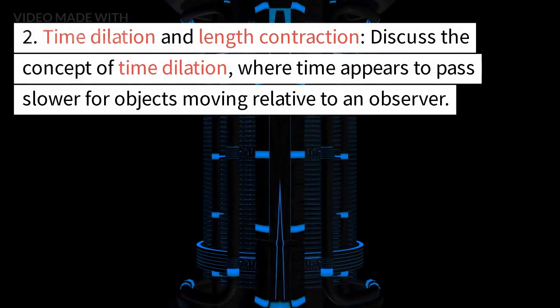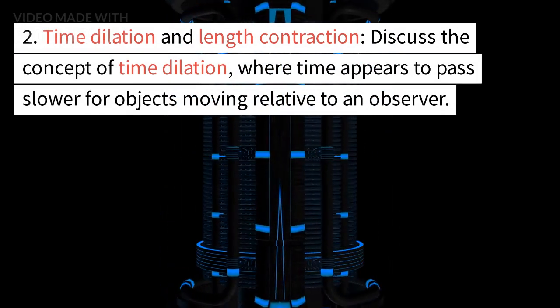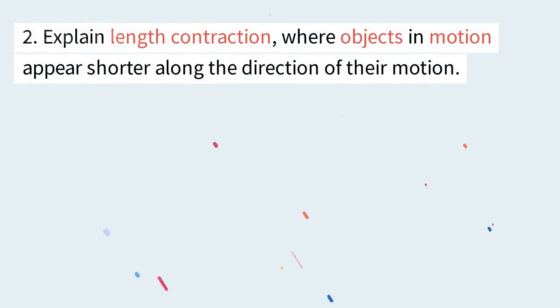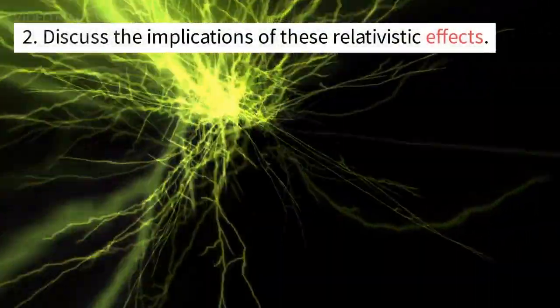Time Dilation and Length Contraction. Discuss the concept of time dilation, where time appears to pass slower for objects moving relative to an observer. Explain length contraction, where objects in motion appear shorter along the direction of their motion. Discuss the implications of these relativistic effects.